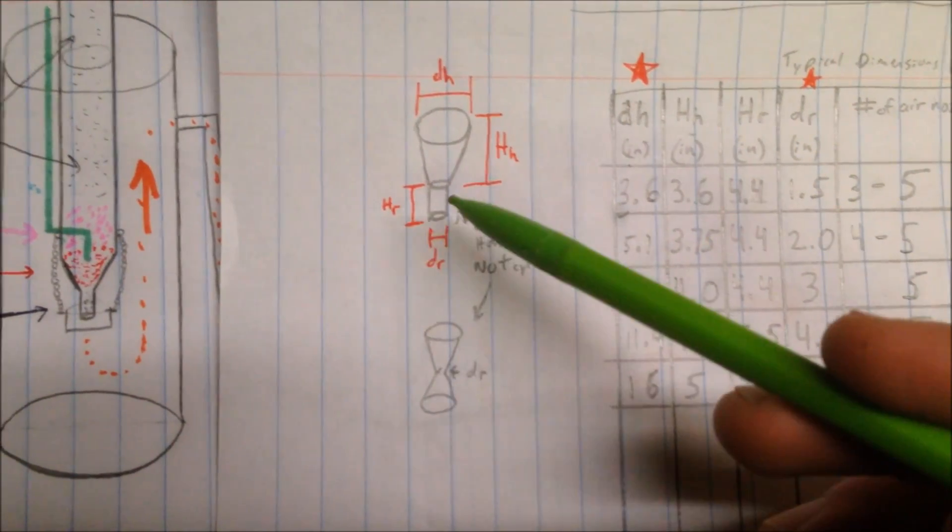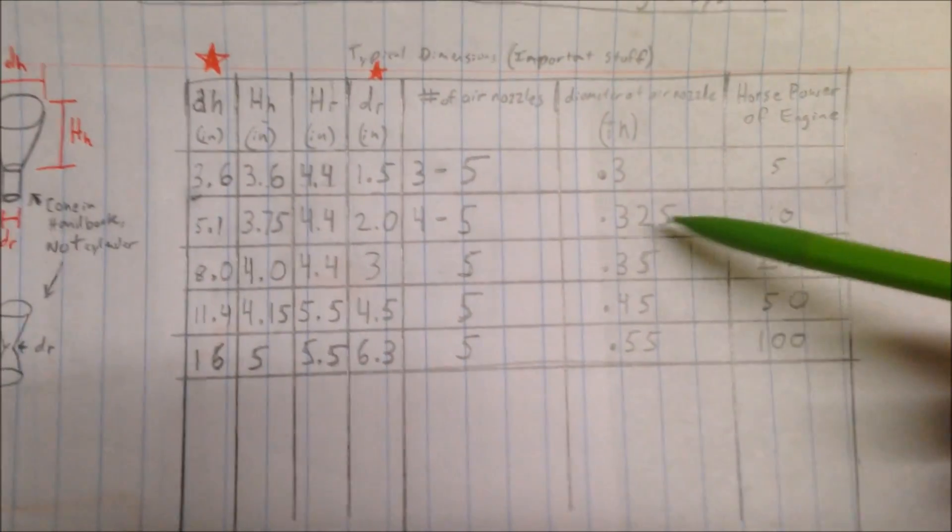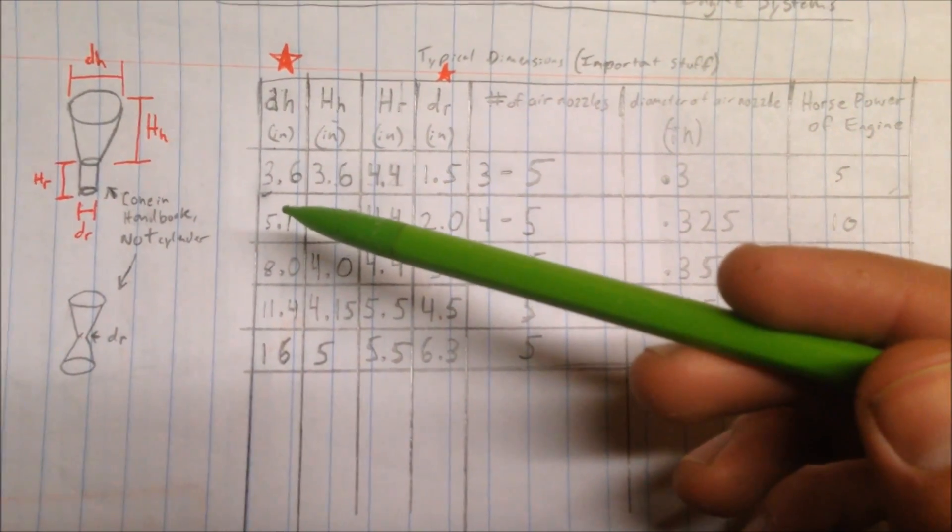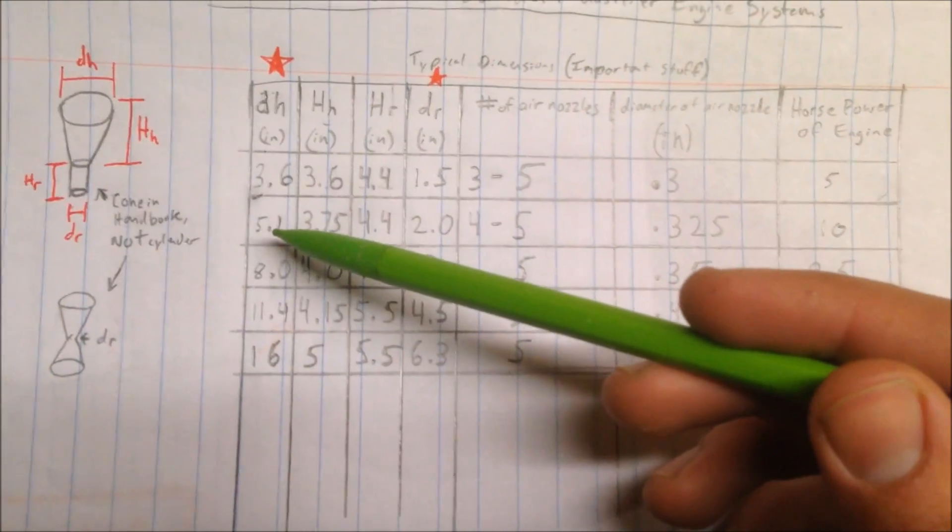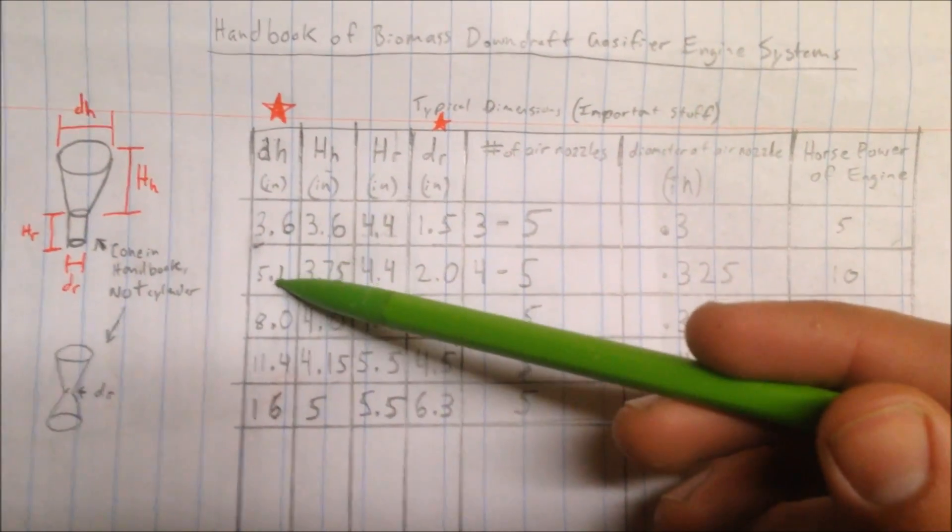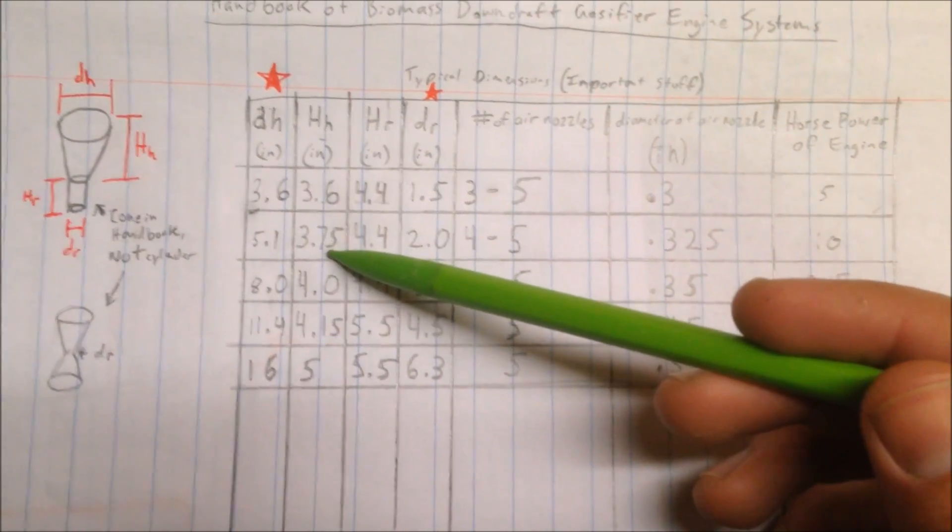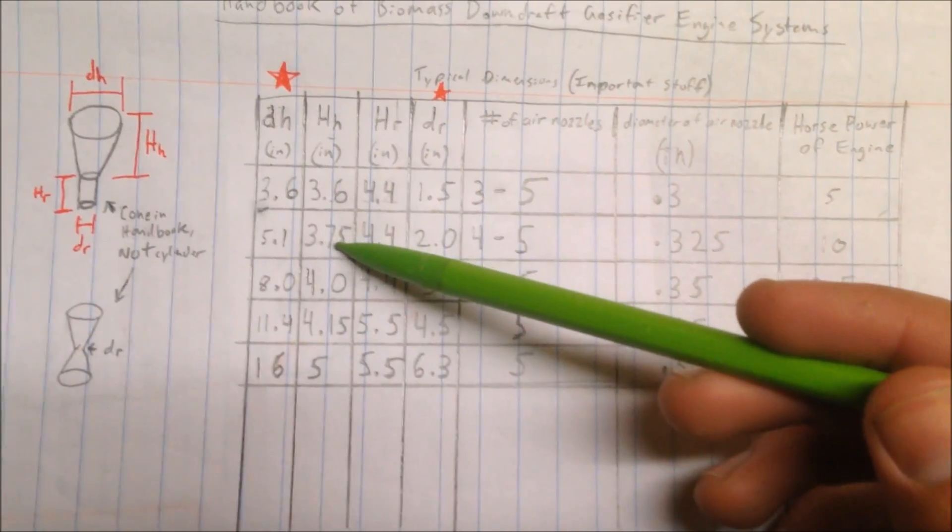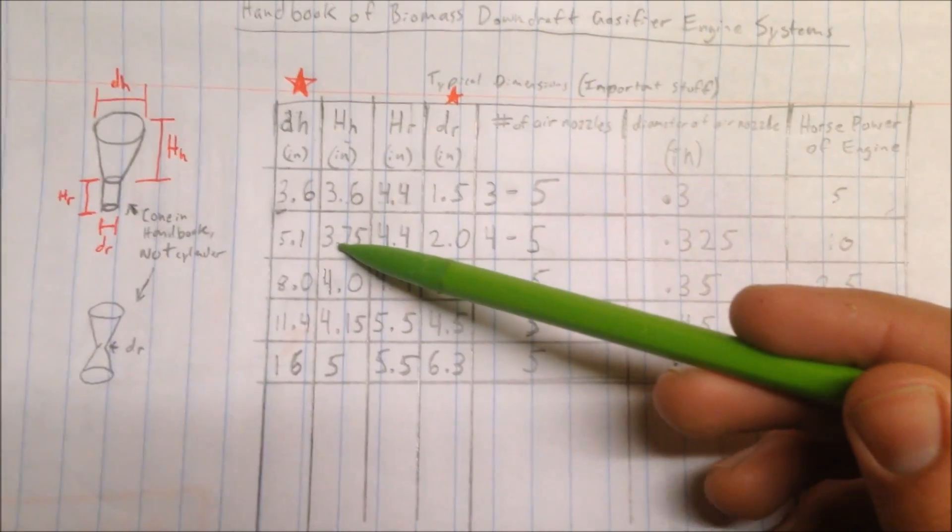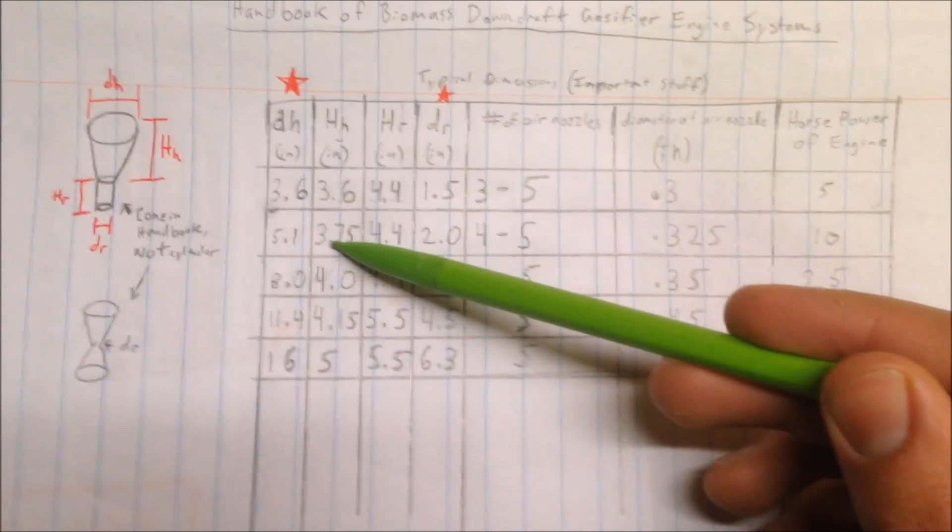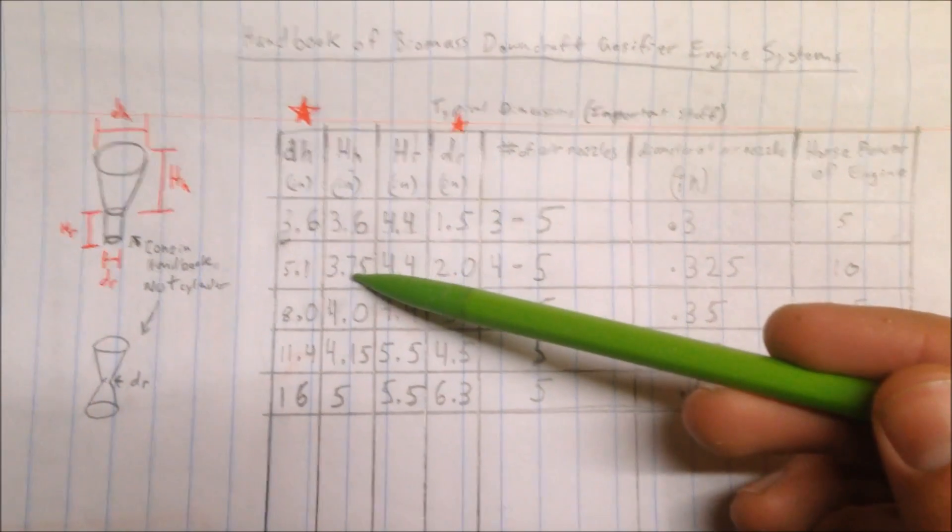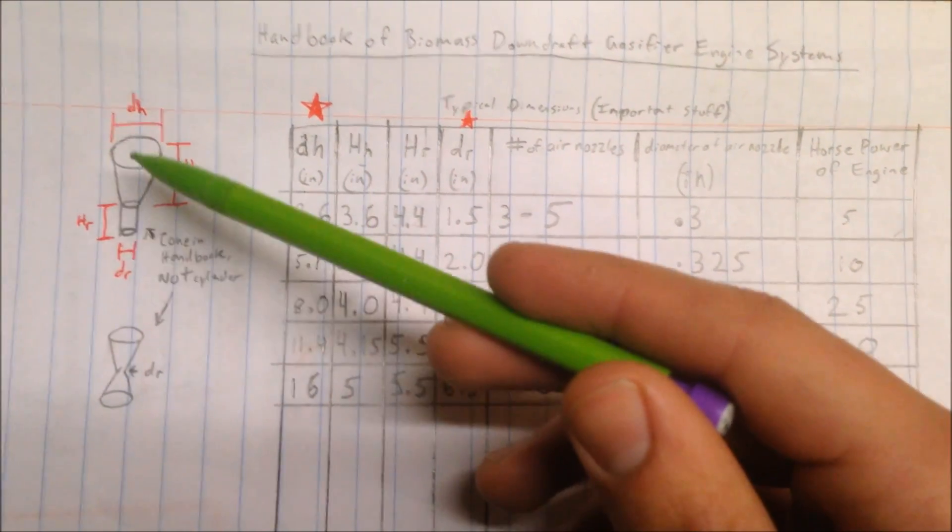As you can see here: DH diameter of the hearth, height of the hearth, height of the reduction area, and diameter of the reduction area. And all you need to do to convert to the inverted style instead of the flashifier style is make DR right here the reduction area instead of the reduction cone. So for my gasifier, which would be the 10 horsepower approximately, my diameter of my hearth needs to be about 5.1 inches. I can tell you right now mine's 5.25. The height needs to be approximately 3.75. I thought that maybe a little bit longer area would help. This is what comes from the book. So a little longer area I believe would be better because it'll just give it more area to crack the tar and to heat up, but that's just my opinion. Maybe this is better. So that would be the height right here for a 10 horsepower engine.